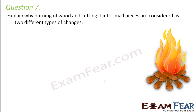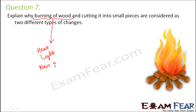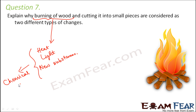When we talk about burning of wood, heat is released, light is released, and at the same time new substances are formed. For example, carbon dioxide is released and ashes are formed. Now all these symbolize a chemical change.